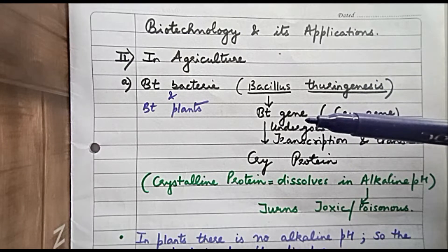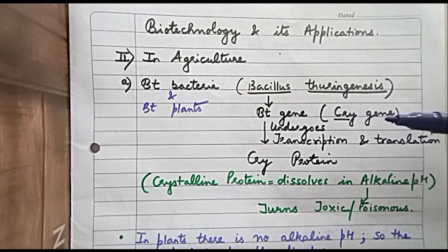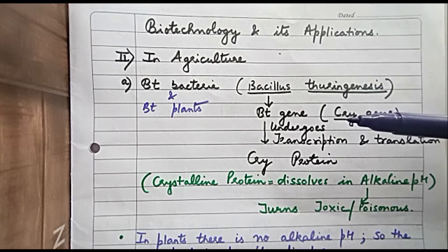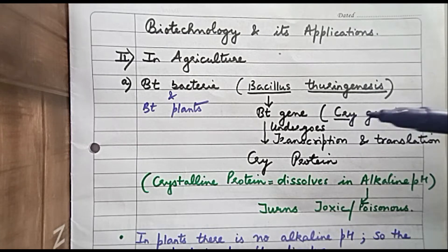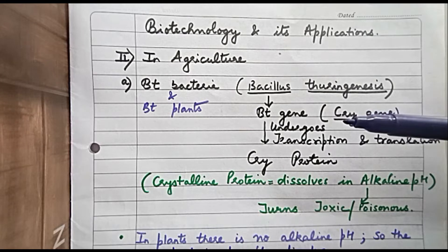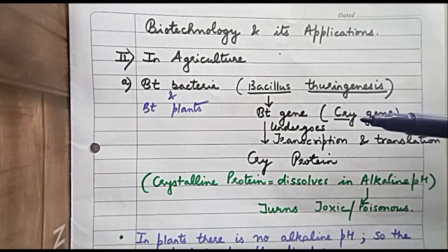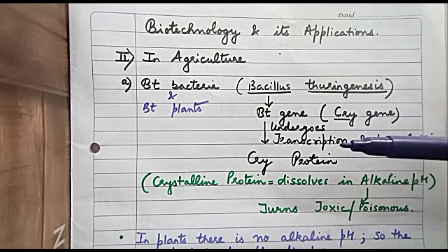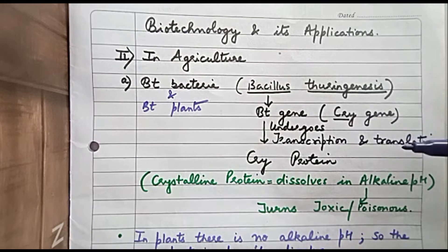This Bt gene is also called the cry gene. If the word 'cry' is printed in italics in the book, that denotes the gene. This cry gene, or Bt gene, will undergo transcription and translation.